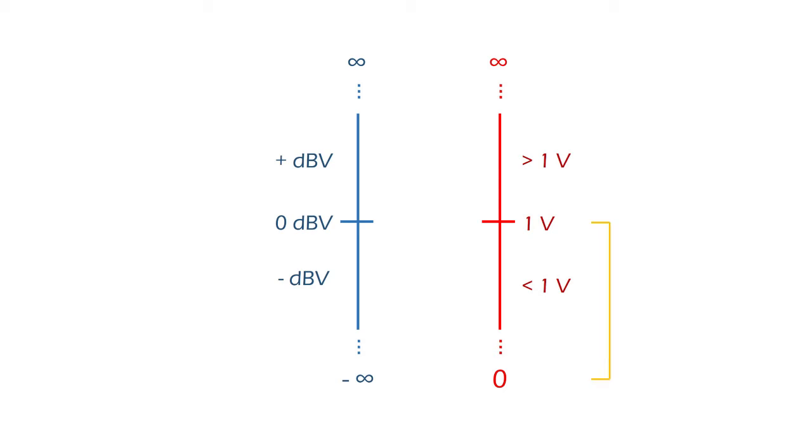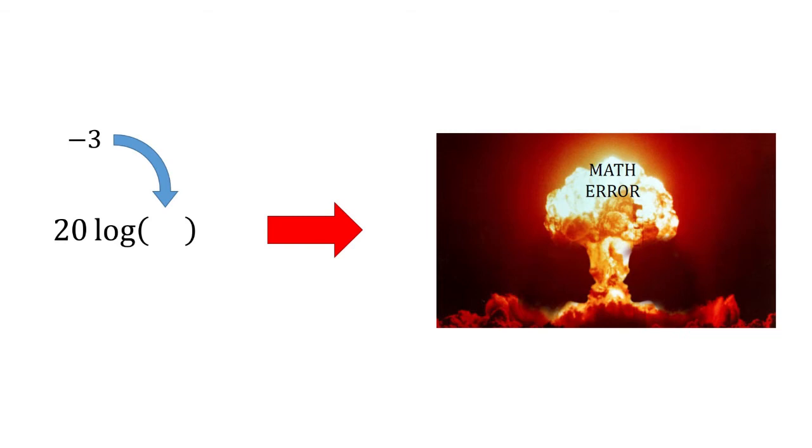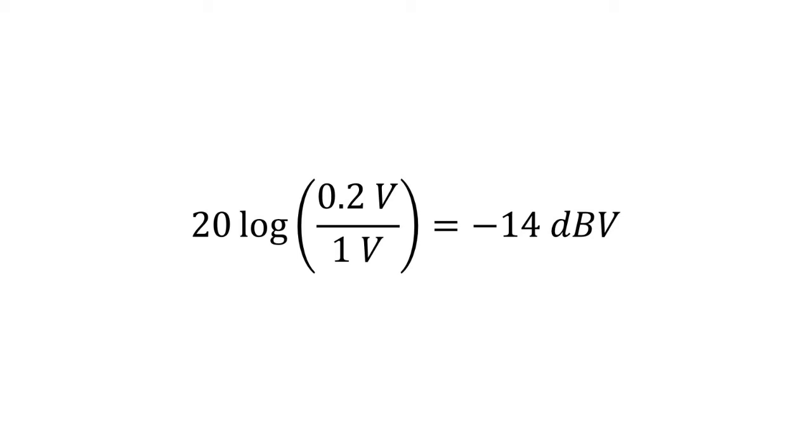Actually, the latter specifically would be between 0 volts and 1 volt, since due to the use of logarithms, it is not possible to convert negative numbers to decibels. For example, 0.2 volts equals negative 14 decibels volt.